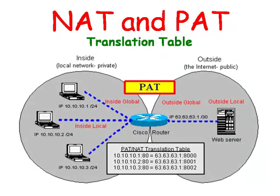PAT is short for Port Address Translation. PAT is a variation of NAT in that NAT only uses the IP address of the client machine to form a unique public IP address. But PAT uses both the IP address and its port number to make a unique address. PAT ensures that a different TCP/IP port number is used for each client session with the server on the internet.